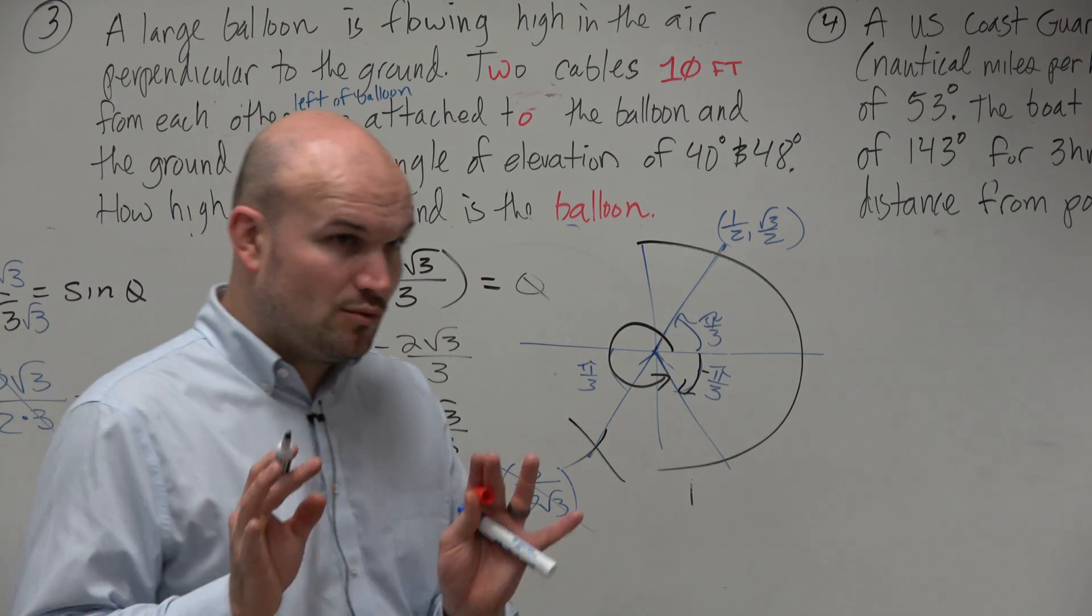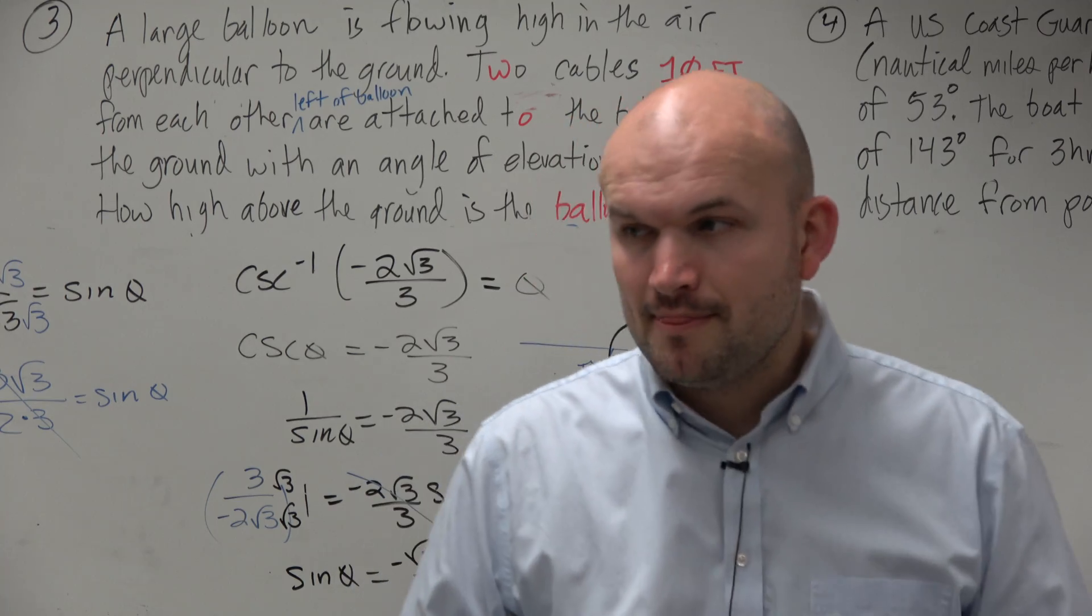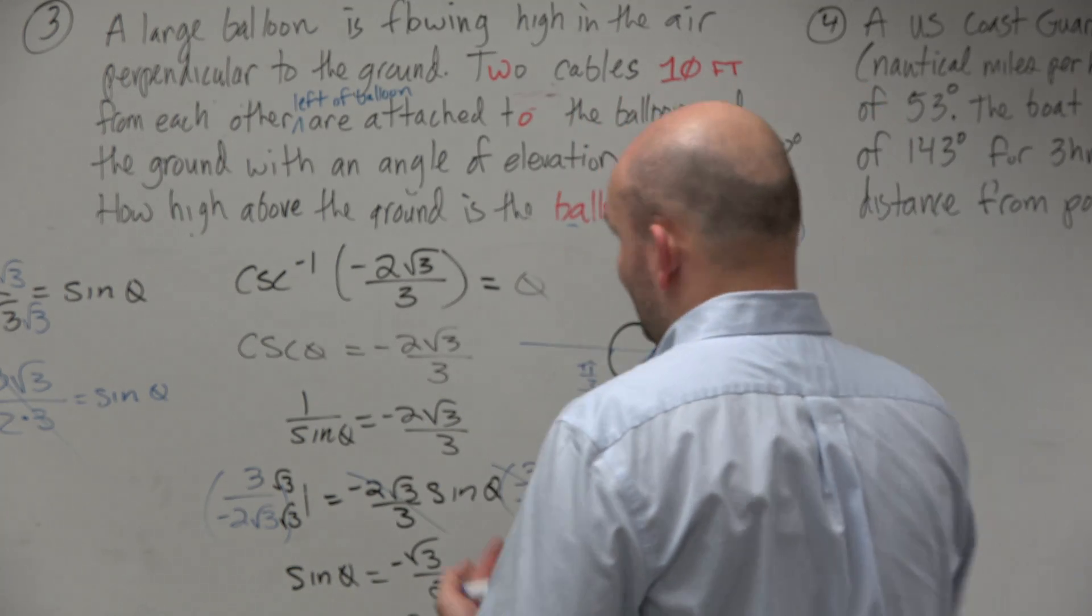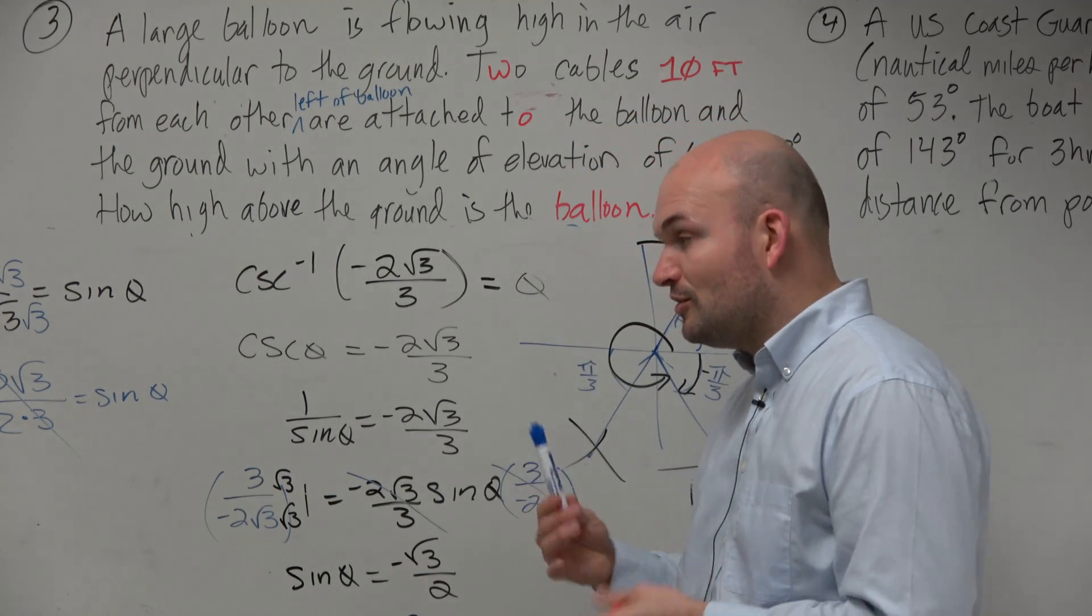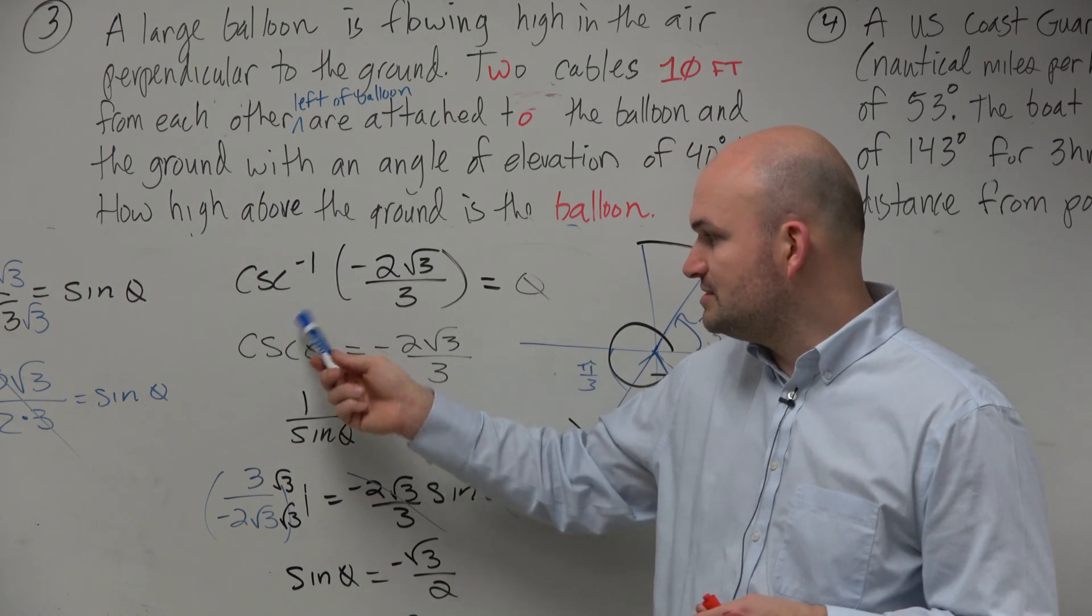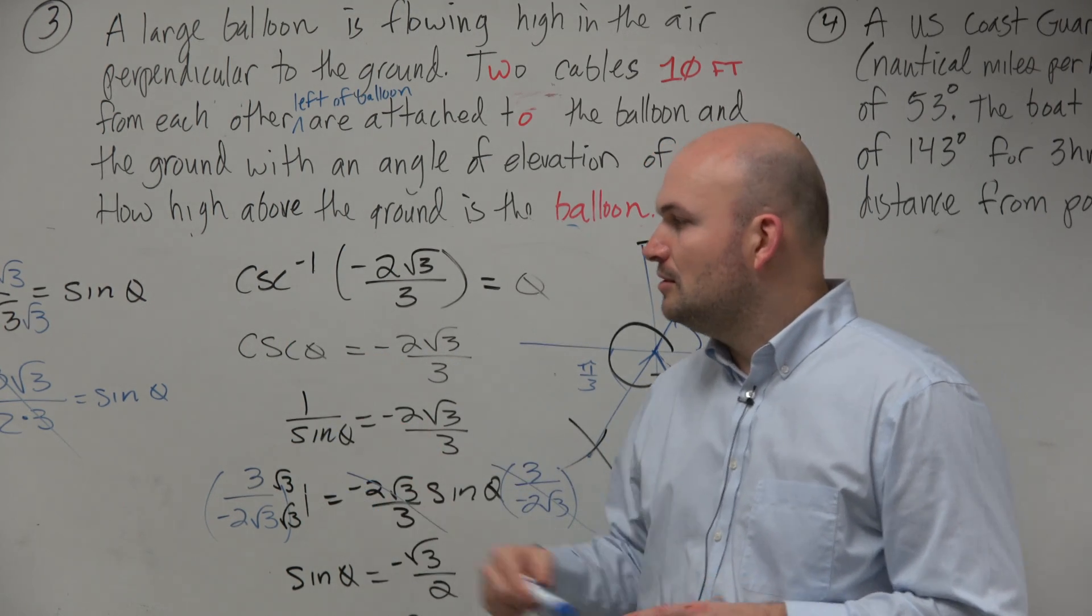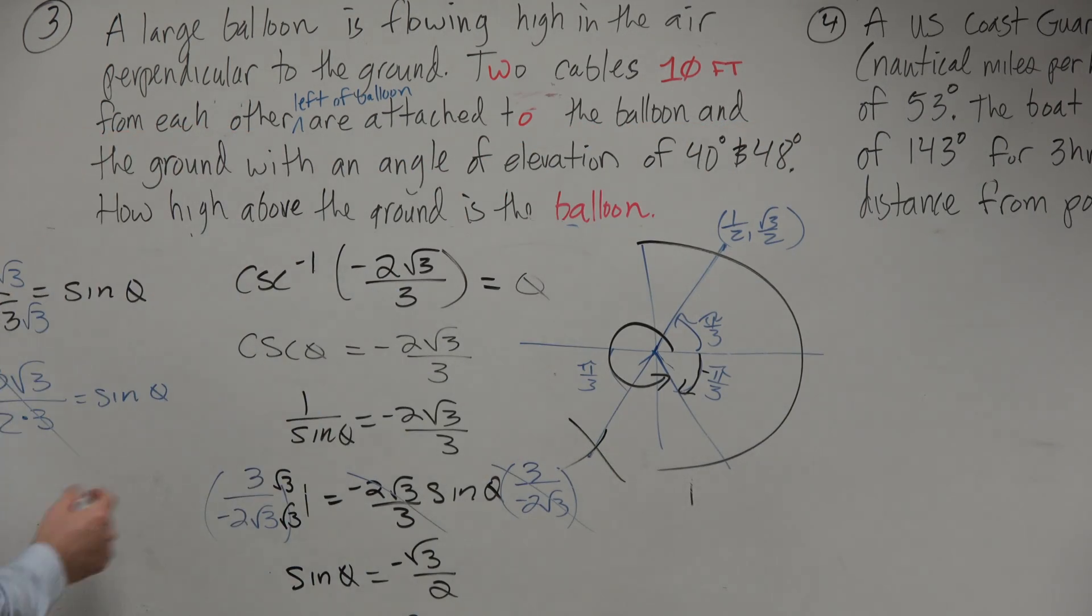Now, I showed you guys all of this work. I showed you guys all of this work because I wanted you guys to understand it. Another way you guys could do this, rather than rewriting cosecant as 1 over sine, you could just take the reciprocal of this. You could just say sine of theta equals 1 over negative 2 radical 3 over 3. And when you do that, when you simplify this, you're going to get negative square root of 3 over 2. Same thing.